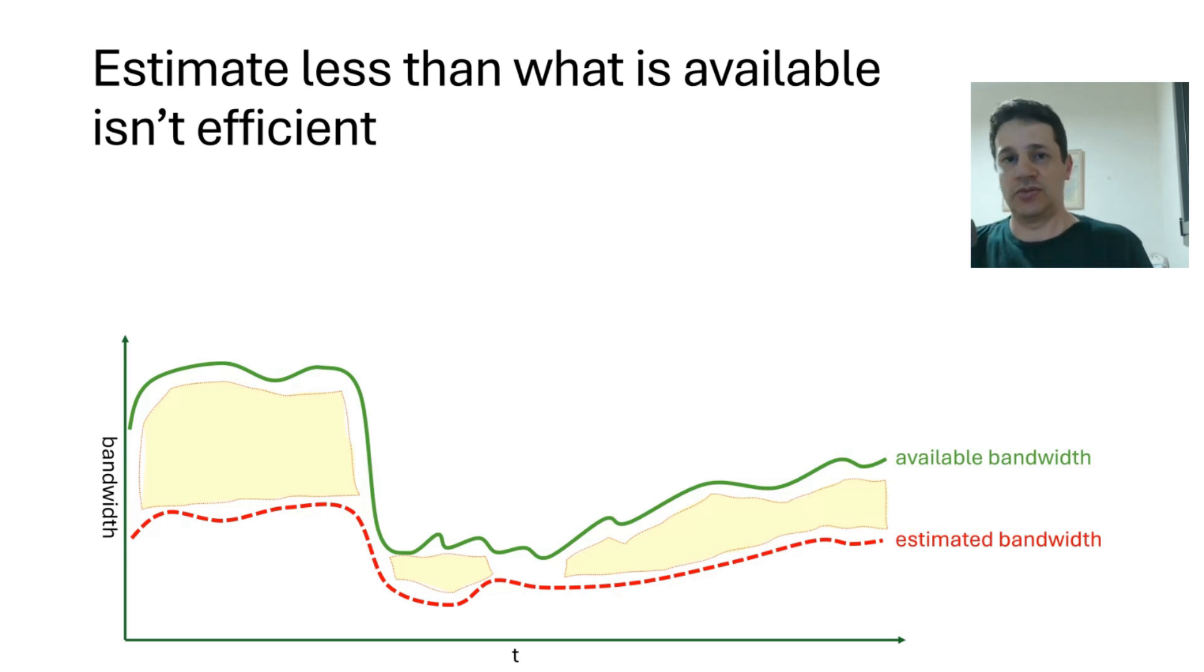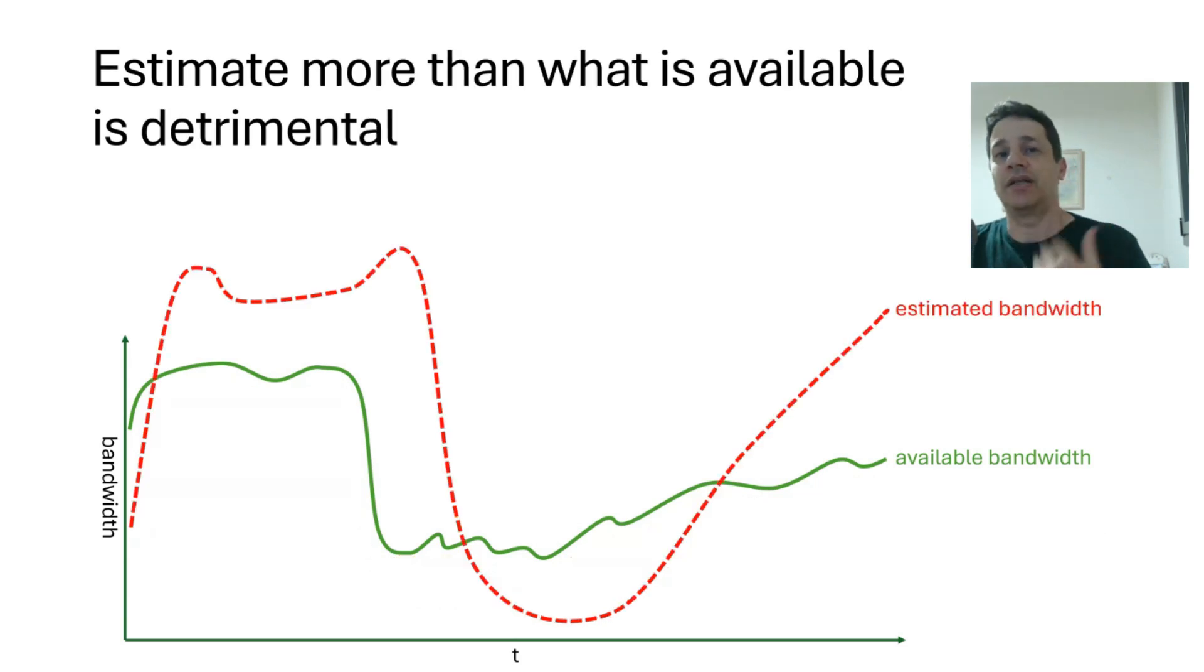What happens if the opposite is what's occurring? We're overestimating the bandwidth that we have. In this case, this is detrimental.